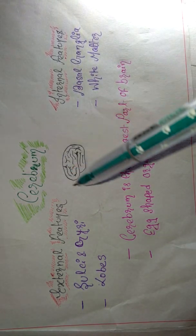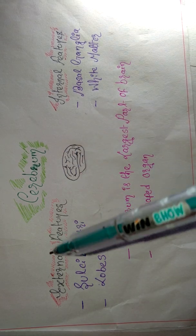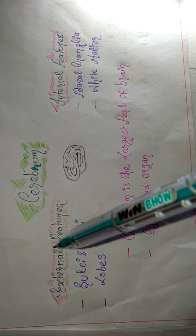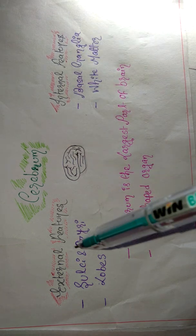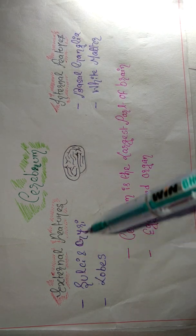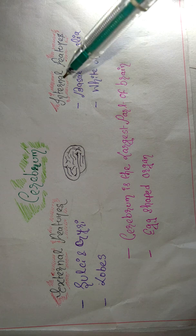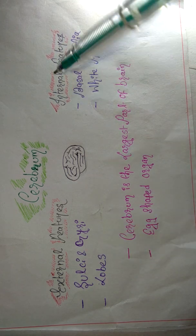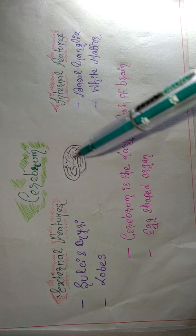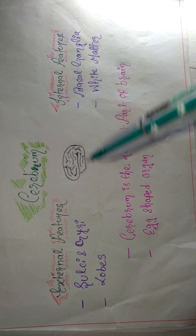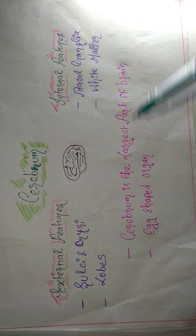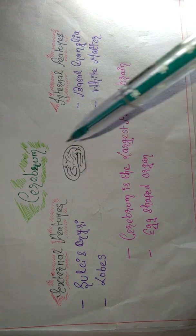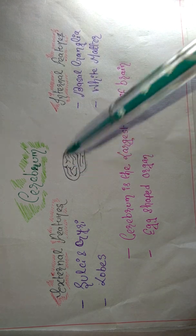Now let's study the cerebrum in detail — it is the uppermost and the biggest part of the brain. Externally it has sulci, gyri, and lobes; internally it has basal ganglia and white matter. The cerebrum is the largest part of the brain and it is an egg-shaped organ.